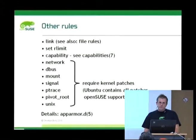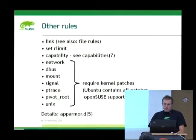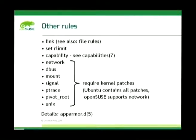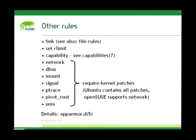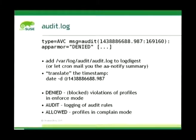So much for file rules, the most important ones. Let me give a quick overview of other supported rules. There are link rules which somewhat overlap with file rules. Then rlimit rules to restrict how much CPU, memory, or other resources a process can use. We have capability rules, and network rules — though those require a patch not yet in Debian. The other newer rule types are also not in Debian yet. For details, I recommend reading the AppArmor.d man page. For the audit log, the most interesting thing is translating the timestamp with 'date -d @<number>', and you'll see 'denied' for blocked events, 'allowed' for complain mode events, and 'audit' for audited ones.